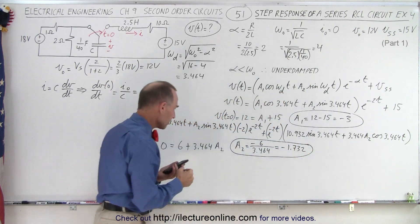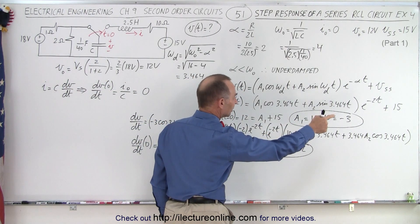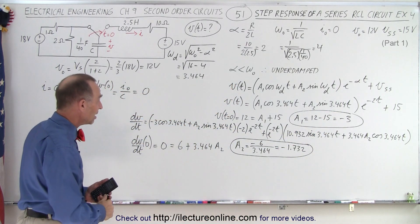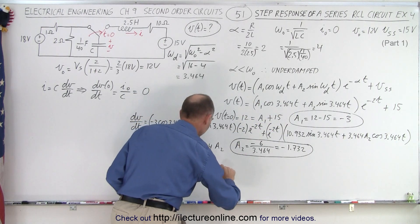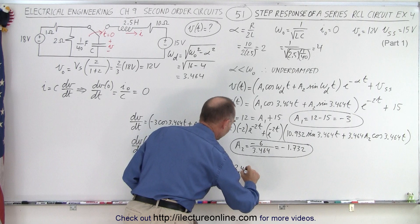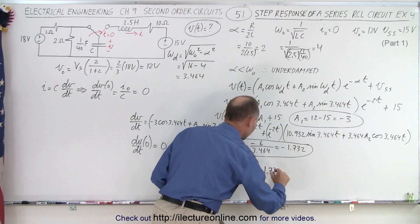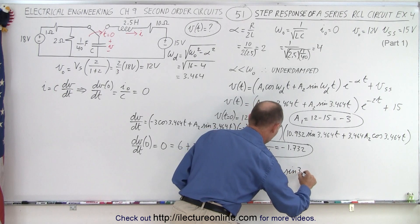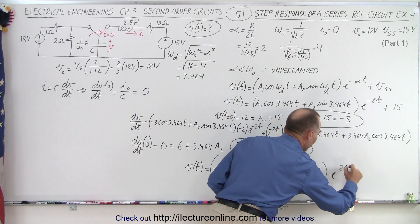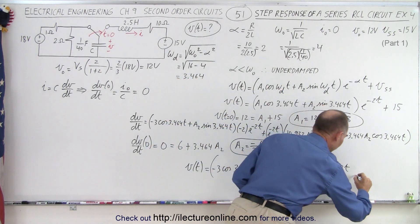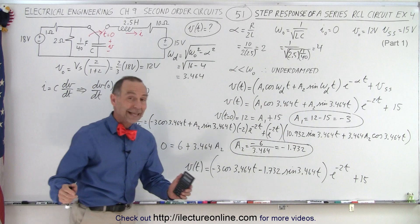Now we have a1, a2, alpha, and the steady-state voltage. The final answer for the voltage as a function of time is: v(t) = [−3·cos(3.464t) − 1.732·sin(3.464t)]·e^(−2t) + 15. The transient portion eventually decays to zero, leaving the steady-state voltage of 15 volts. And that is how it's done.